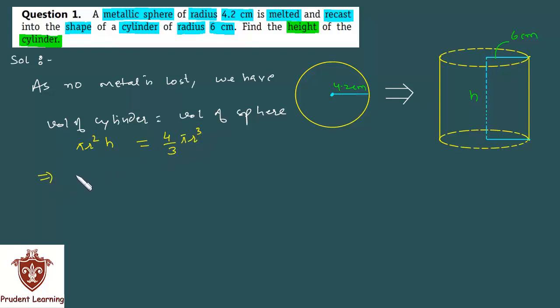Substituting the values, we have π times radius of the cylinder is 6 cm and height is h, which is unknown. Moving on to sphere, we have 4/3 times π times r³. Radius of the sphere is 4.2, so multiply 4.2 three times. Here π gets cancelled and we have h equals 4 × 4.2 × 4.2 × 4.2 over 3 × 6 × 6.